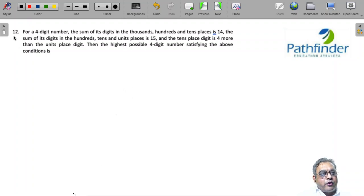CAT 2021 Slot 2 Question Number 12. For a four-digit number, the sum of its digits in thousands, hundreds, and tens places is 14. So let us say that the number in question is a, b, c, and d, where a is the thousands digit, b is the hundreds, c is the tens, and d is the units digit.